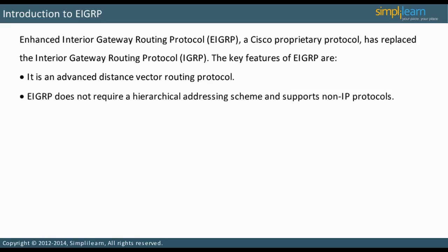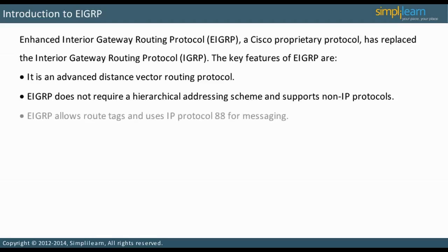EIGRP does not require a hierarchical addressing scheme, but it works better with it. It is the only routing protocol covered in this course that can support non-IP protocols. Protocol dependent modules, PDMs, handle Novell IPX, AppleTalk, as well as IP. EIGRP allows route tags and uses IP Protocol 88 for messaging. It does not use UDP or TCP.